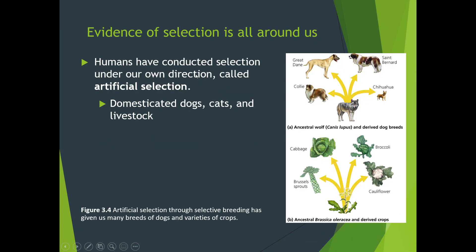Humans have conducted selection under their own conditions called artificial selection, and we've been doing this for a long time. You see it with domesticated dogs and cats and livestock — dogs came from wolves and now we have the Chihuahua and the Great Dane. We selected and bred animals to have traits we wanted. Same with plants: cabbage, broccoli, cauliflower, and Brussels sprouts all started from one little weed, and we took out different traits and selectively bred those seeds to get what we want.